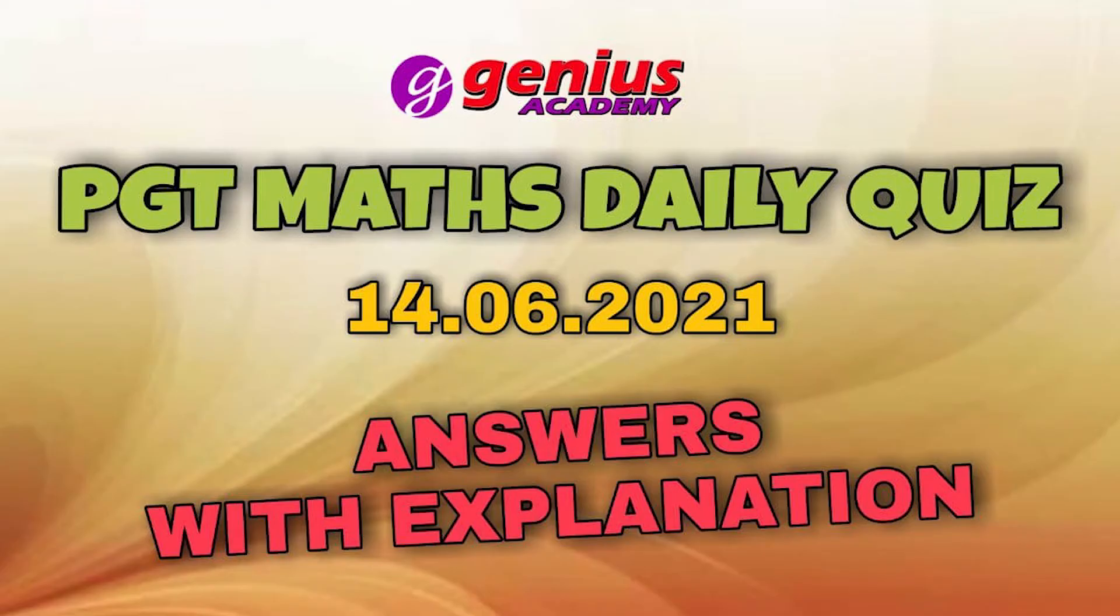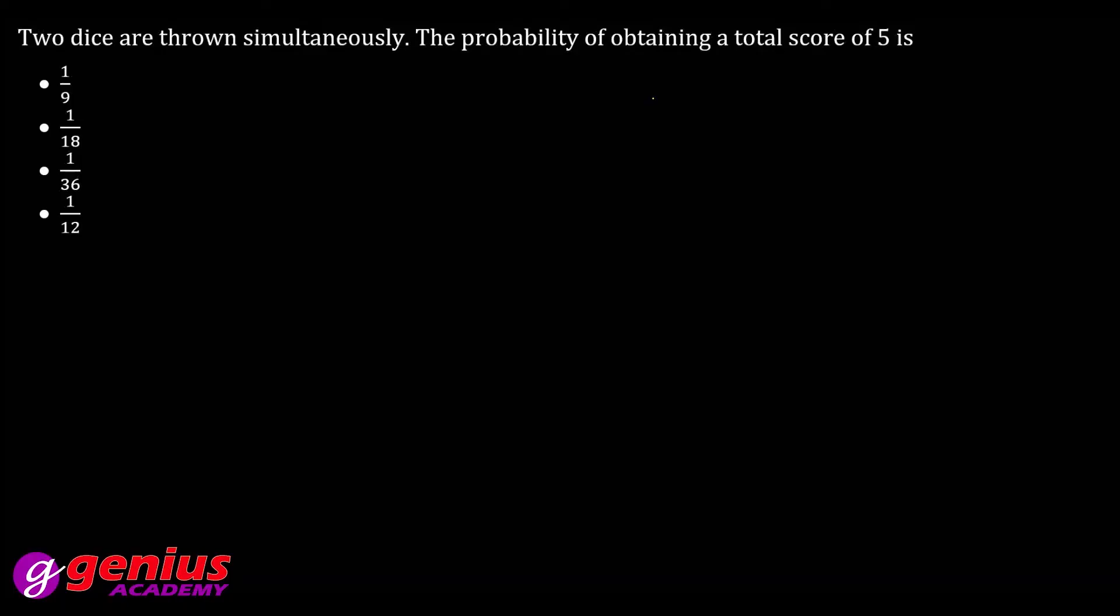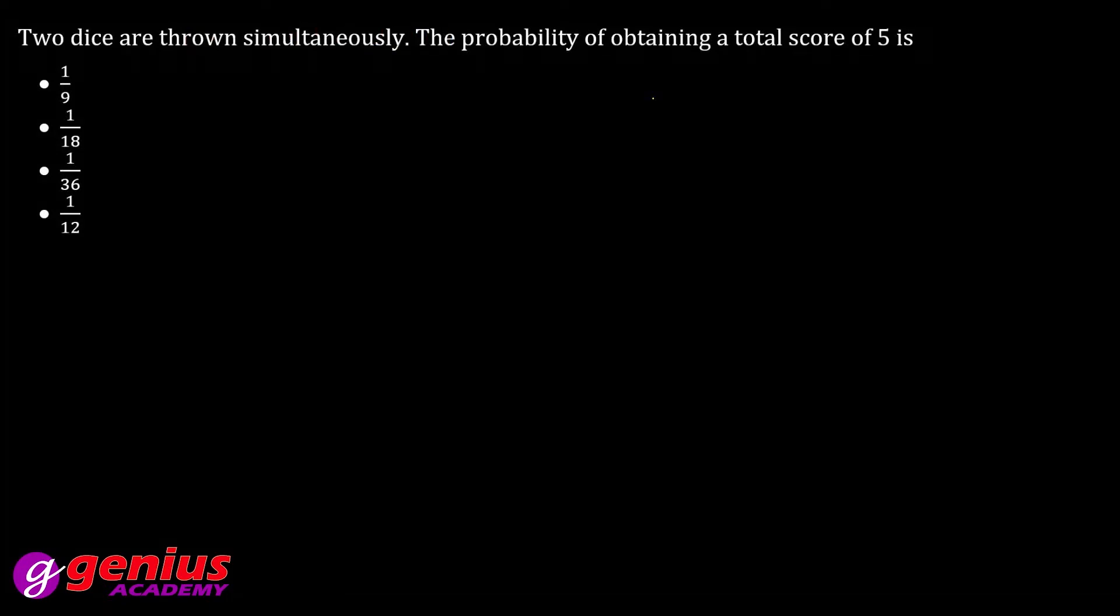Hello friends, welcome to Genius Academy. 14th June ki quiz ka solution dekheye. First question is two dice are thrown simultaneously. Find the probability of obtaining a total score of 5. So it is a very easy question. You know the total outcomes, when two dice are thrown, the number of sample space or total number of elements will be 36.